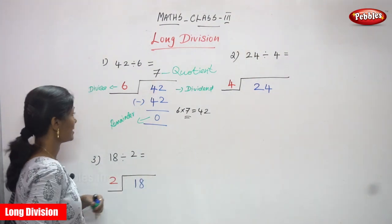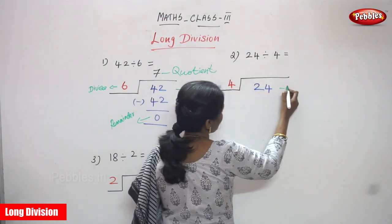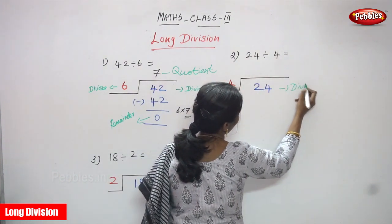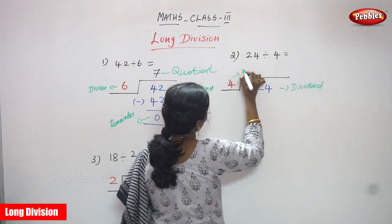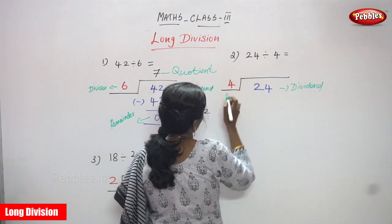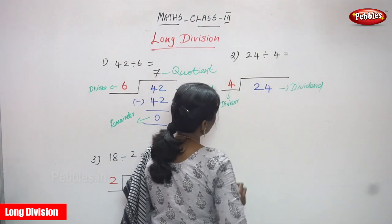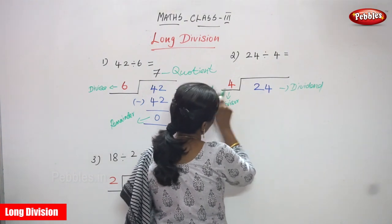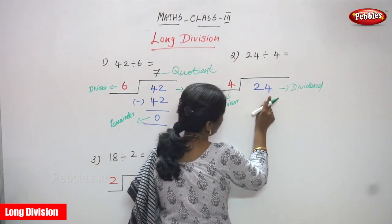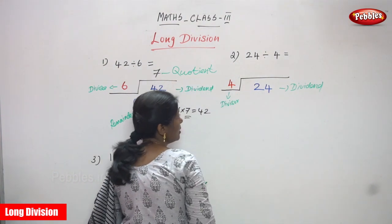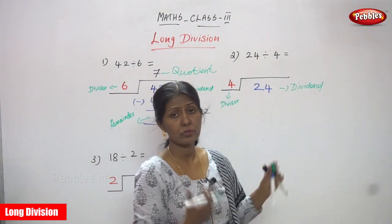Now we are going to see this again — the next sum. That is 24 is divided by 4. So 24 is the dividend, D-I-V-I-D-E-N-D, and 4 is the divisor, D-I-V-I-S-O-R. I used blue colour for the dividend and red colour for the divisor, to differentiate the terms.